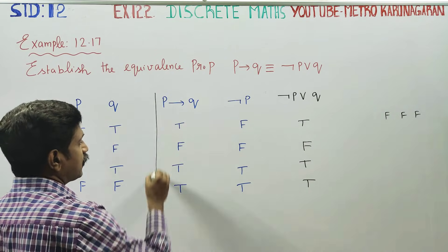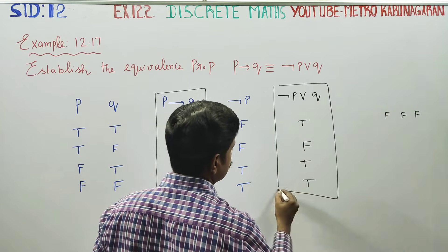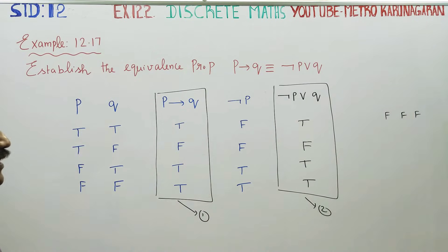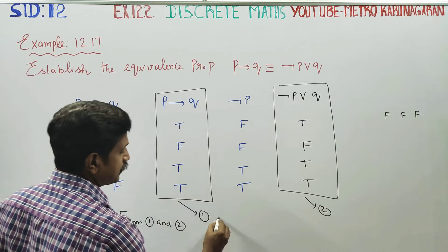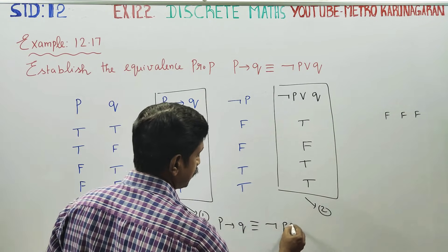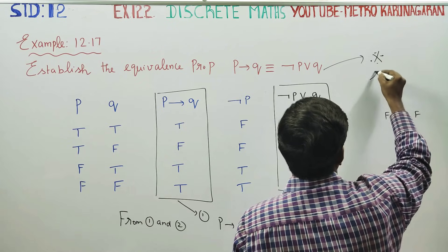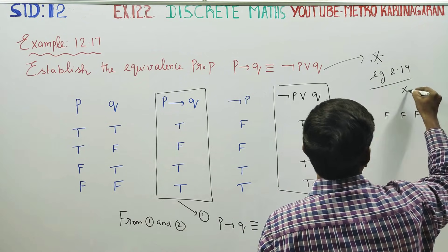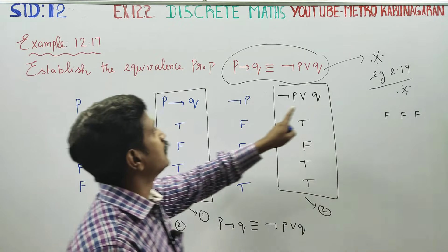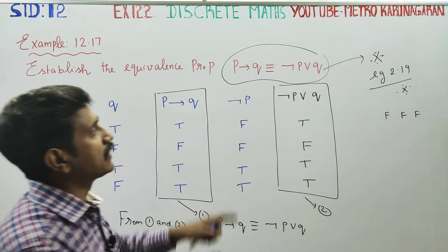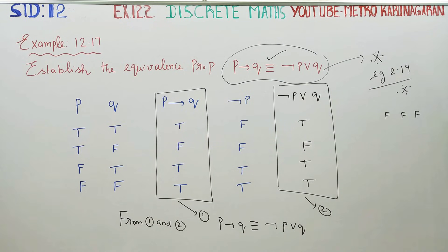In the box, result column 1 and result column 2 are identical. From column 1 and column 2, you can clearly see that if P then Q is equal to negation P or Q. This is example 12.17, and the formula is also referenced in example 12.19. If P then Q is equal to negation P or Q.